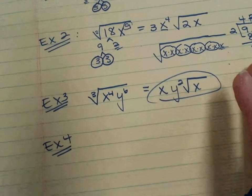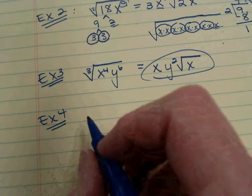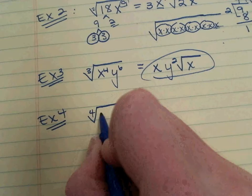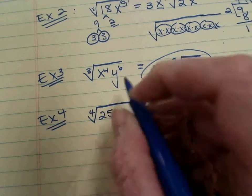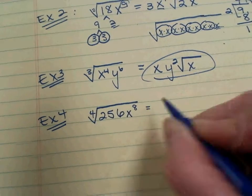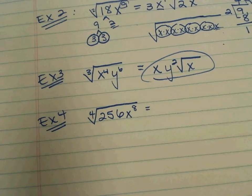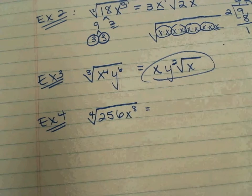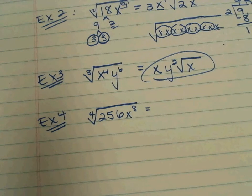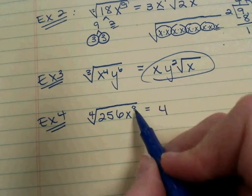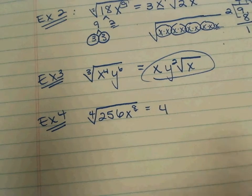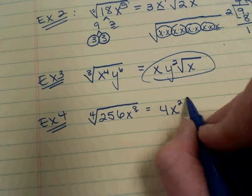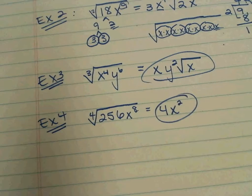Two more examples to go. So we have example 4. 4th root of 256 x to the 8th. If you remember from our opener, we did the 4th root of 256. You can plug that into your calculator again using that math menu. Number 5. 4. It's 4. Good. And now 8 divided by 4 is 2. So just x squared comes out. Everybody breaks free. There's a whole jail break here.